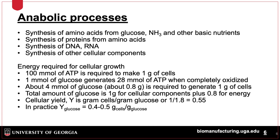Anabolic processes are those involving creation of the building blocks of cells. A general rule is that 100 millimoles of ATP is needed to generate 1 gram of cells. The energy required is based on the amount of ATP generated from a substrate. For glucose, 1 millimole generates 28 millimoles of ATP, so 4 millimoles of glucose, or about 0.8 grams, is needed to generate the energy to build 1 gram of cells, plus 1 gram of glucose for cellular components.